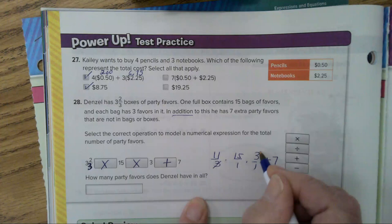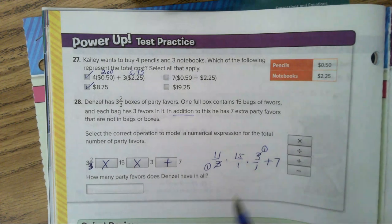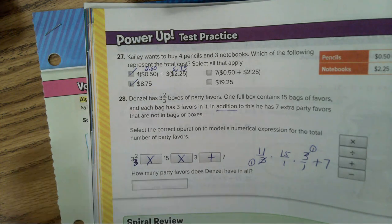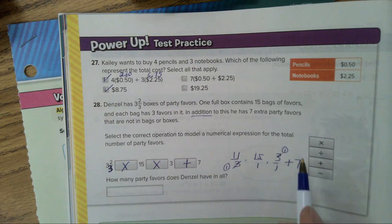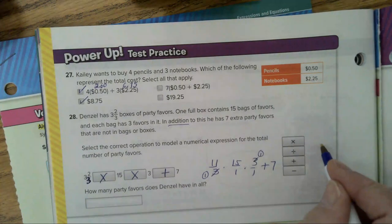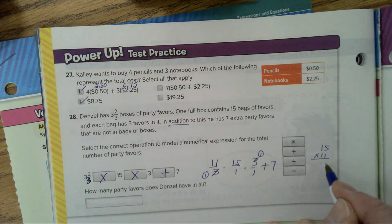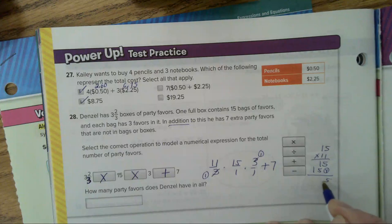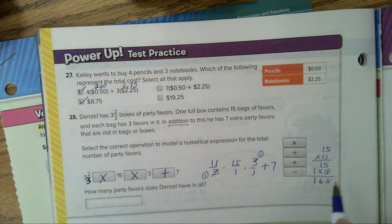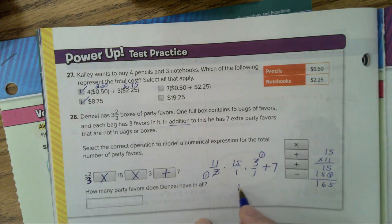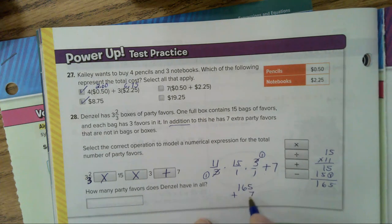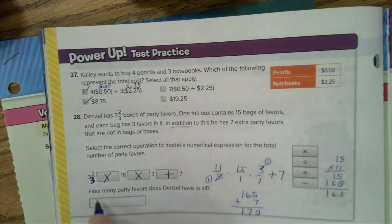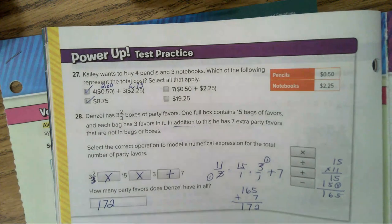And then the answer that you will get for this problem here: 11 thirds times 15 over 1 times 3 over 1 plus 7. Well, the threes will cancel out and turn into ones. And 11 times 15, back to this problem. We have 11 times 15, place value 0, you have 165. And then add the 7. So 165 plus 7 will give you 172 party favors. That one was a little challenging.